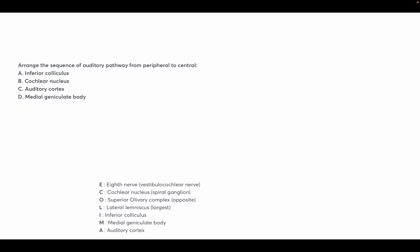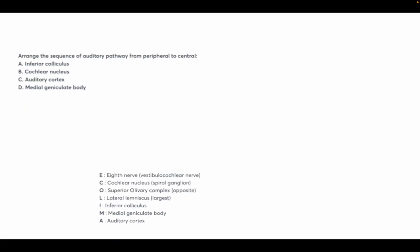Arrange the sequence of the auditory pathway from peripheral to center. Options: inferior colliculus, cochlear nucleus, auditory cortex, medial geniculate body. Use the mnemonic ECOLIMA: E — cochlear nucleus (B), C — O for superior olivary complex, L for lateral lemniscus (A), I for inferior colliculus (A/D), M for medial geniculate body (A), A for auditory cortex (C). The correct order is: cochlear nucleus → inferior colliculus → medial geniculate body → auditory cortex, giving the pattern B, A, D, C.